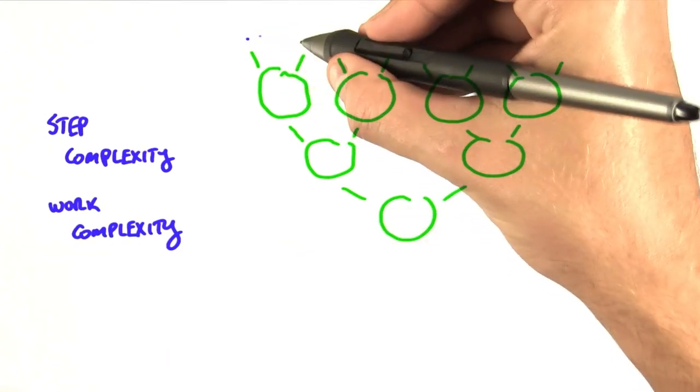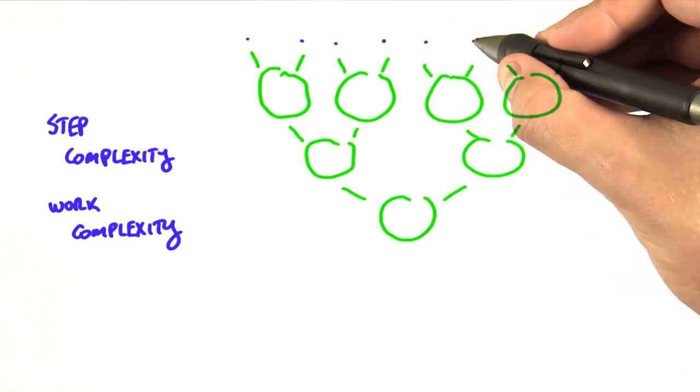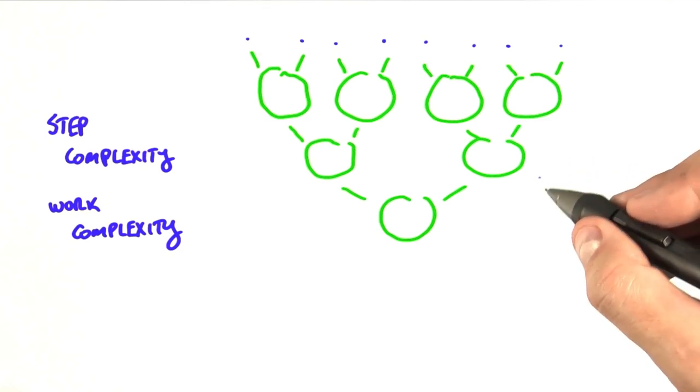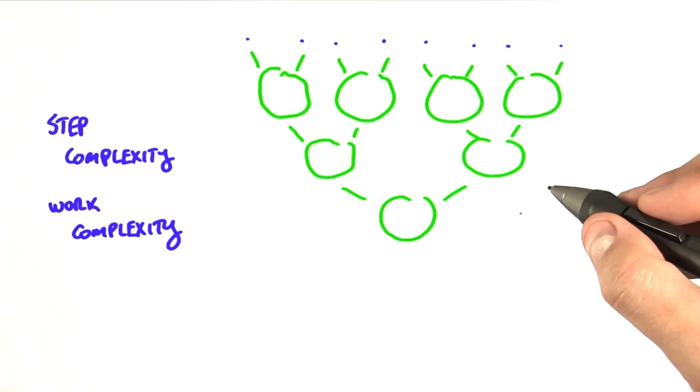So as an example here, we have eight elements that we'd like to combine using this tree-style structure, and so we're going to try to characterize the number of steps that it's going to take us to do this computation, as well as the total amount of work.